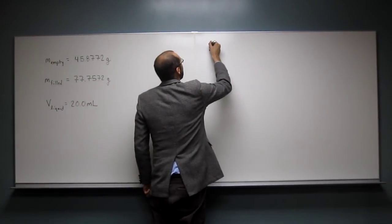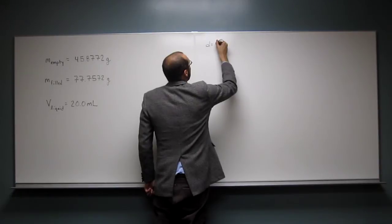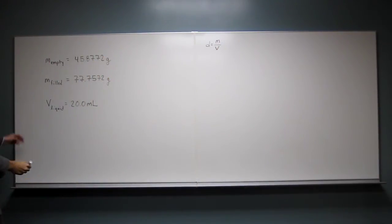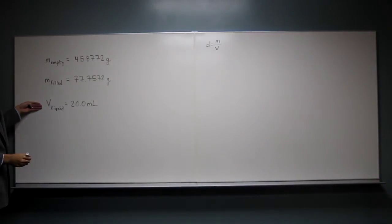If you want to remember, right, density equals mass divided by volume, okay? So we have the volume of the liquid, but we don't have the mass of the liquid, right? So we're looking for the density of the liquid.